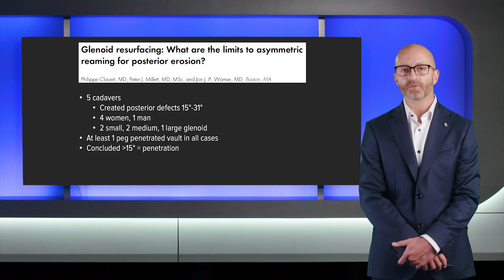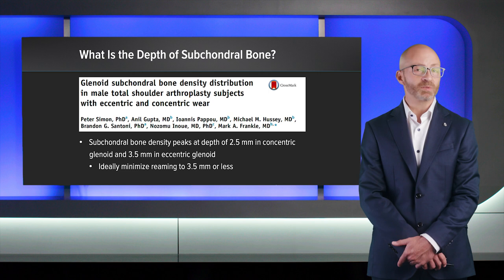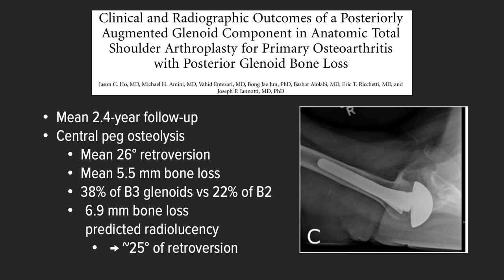How deep is the subchondral bone? One study suggests that depth is about 3.5 millimeters in the setting of an eccentric glenoid, so you want to limit your reaming to less than that, because we know that's important for long-term support. Regarding augmented glenoids, Iannotti looked at his results in a 2.4-year follow-up. Overall, many patients did well, but 6.9 millimeters of bone loss predicted radiolucency.